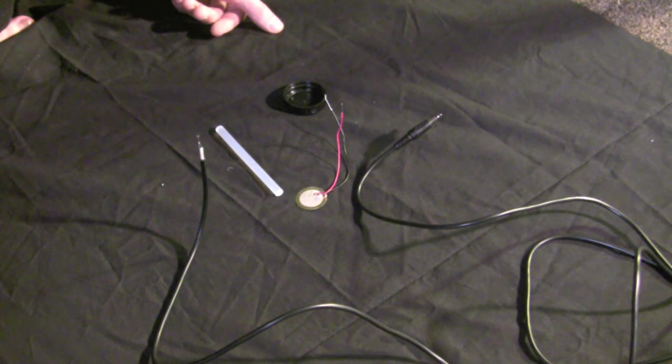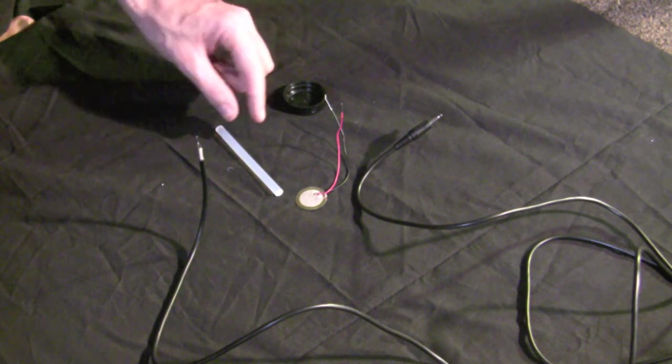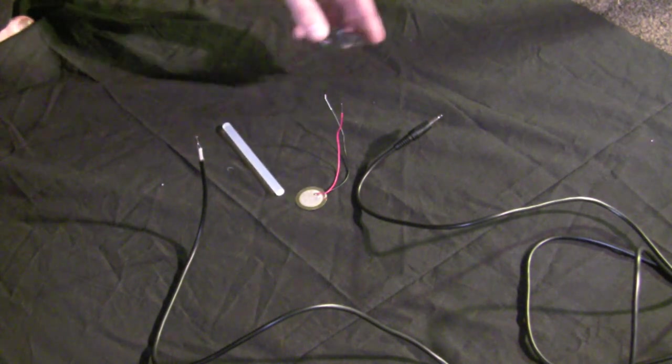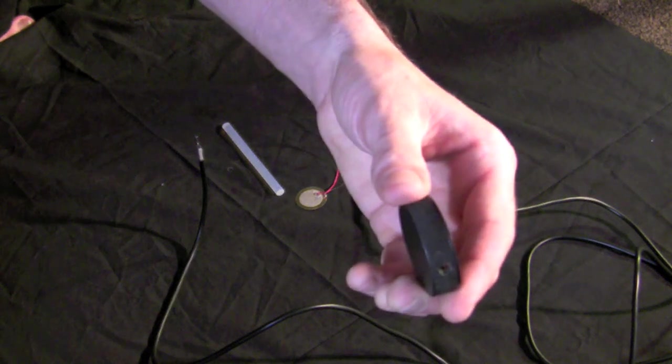Today we're going to make a homemade contact mic out of a Paizo element and a mono cable, some hot glue, and a bottle cap. No solder necessary.